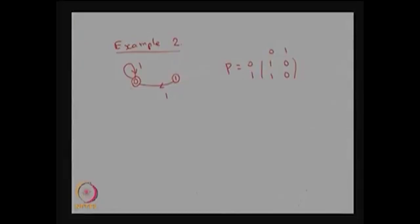Now we will try to find out what is the classification of the states. For state 0, P₀₀(1) = 1, meaning the one-step transition probability of the system moving from state 0 to state 0 is 1. This implies that state 0 is an absorbing state.